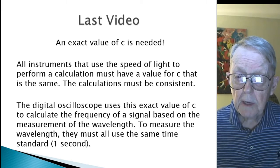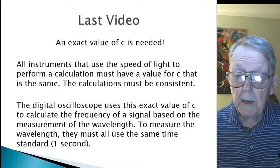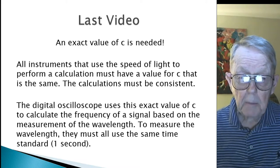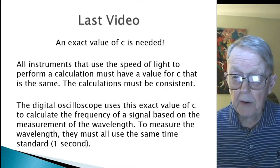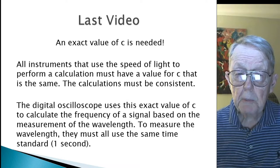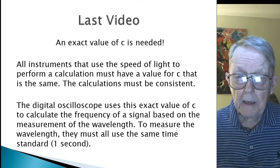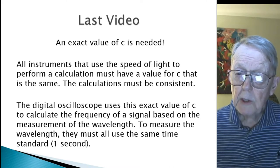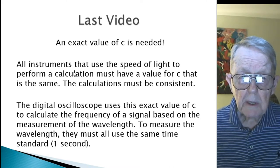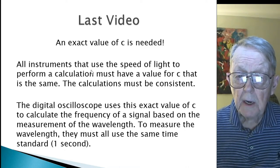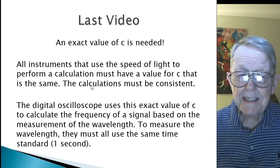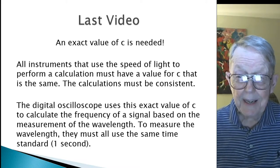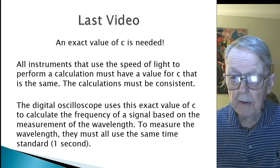When you got to the point in the video where I explained that there's an agreement as to what the value of c is. Although it's not arbitrary, it's based on measurements, and it's probably the average value of many very good measurements of the speed of light. Nonetheless, they landed up with an exact value for the speed of c. And there's a good reason for that, actually. All instruments that use the speed of light to perform a calculation must have a value for c that is the same.